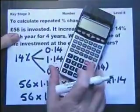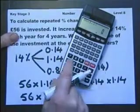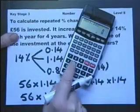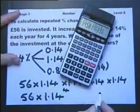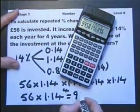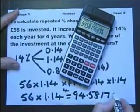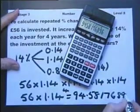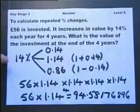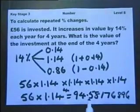And you should appreciate that, in fact, there is a shorter version by just doing that. So let's do it. £56 multiplied by 1.14 raised to the power of 4 equals... Now the only thing you need to appreciate is the answer is a calculator answer, not a necessarily sensible answer. So the last thing you need to appreciate is a sensible answer would be £94.58.